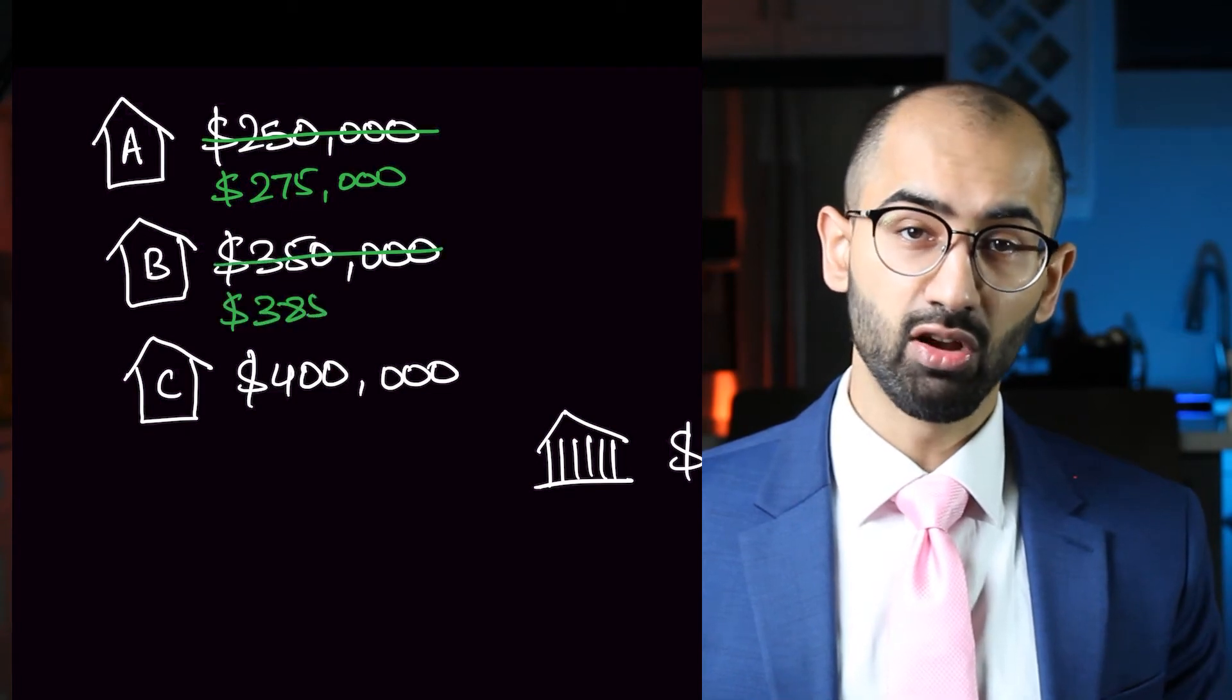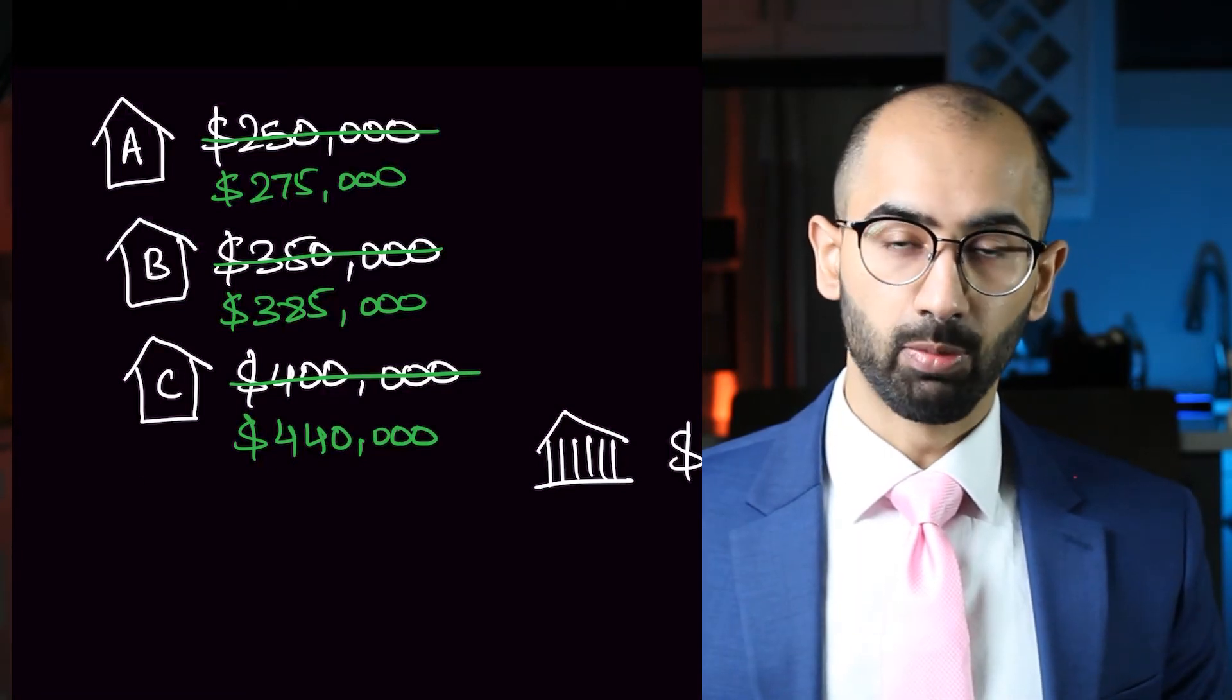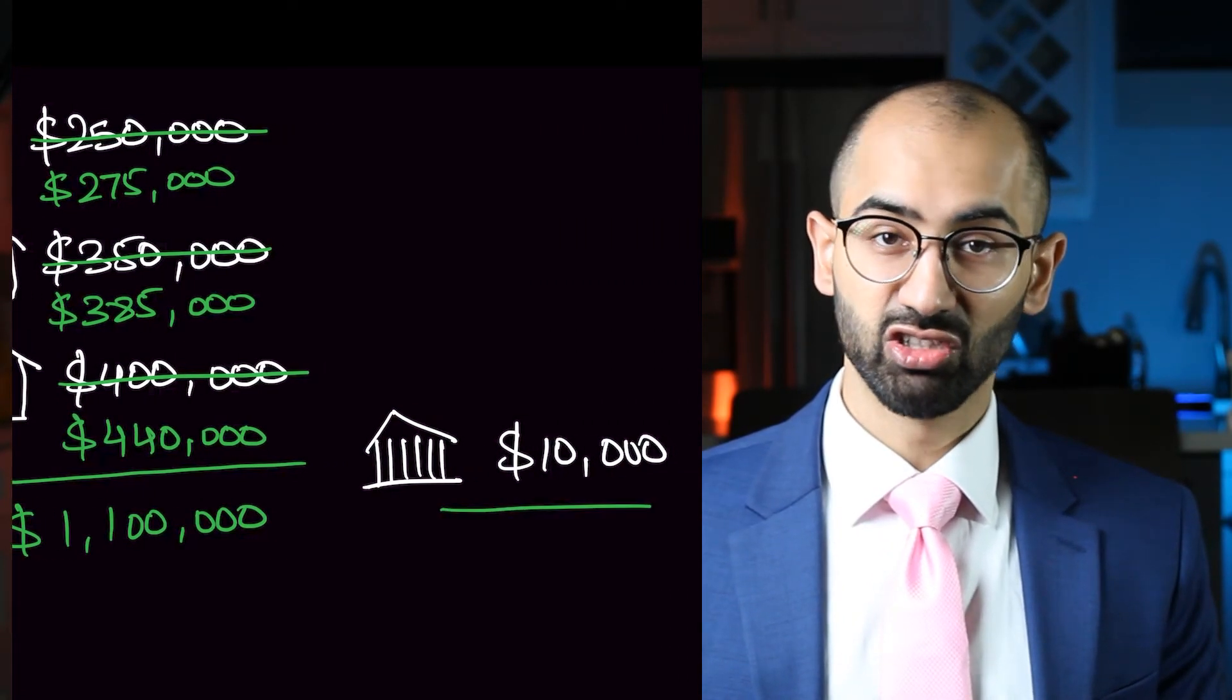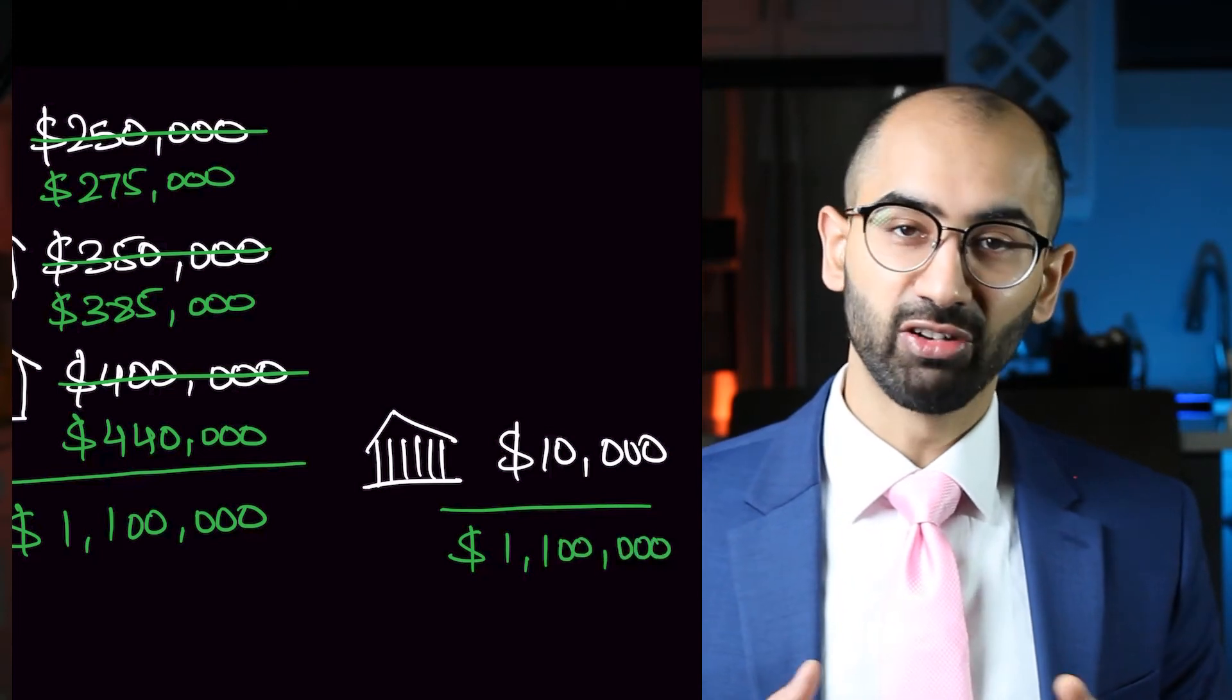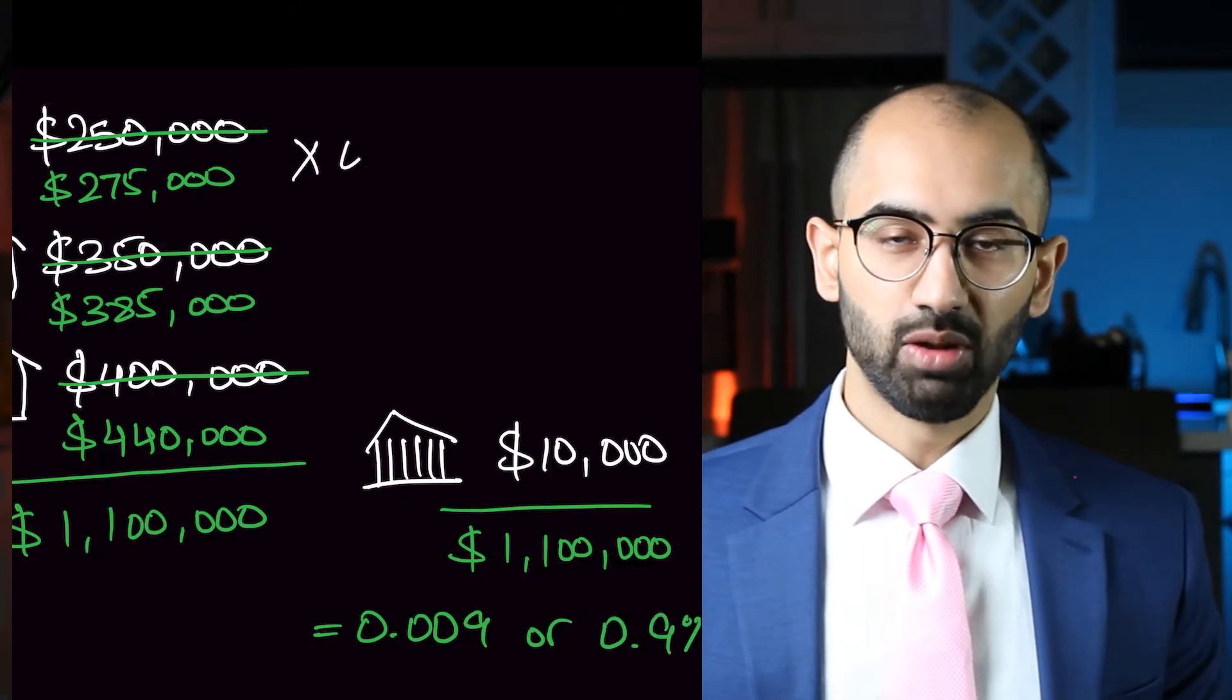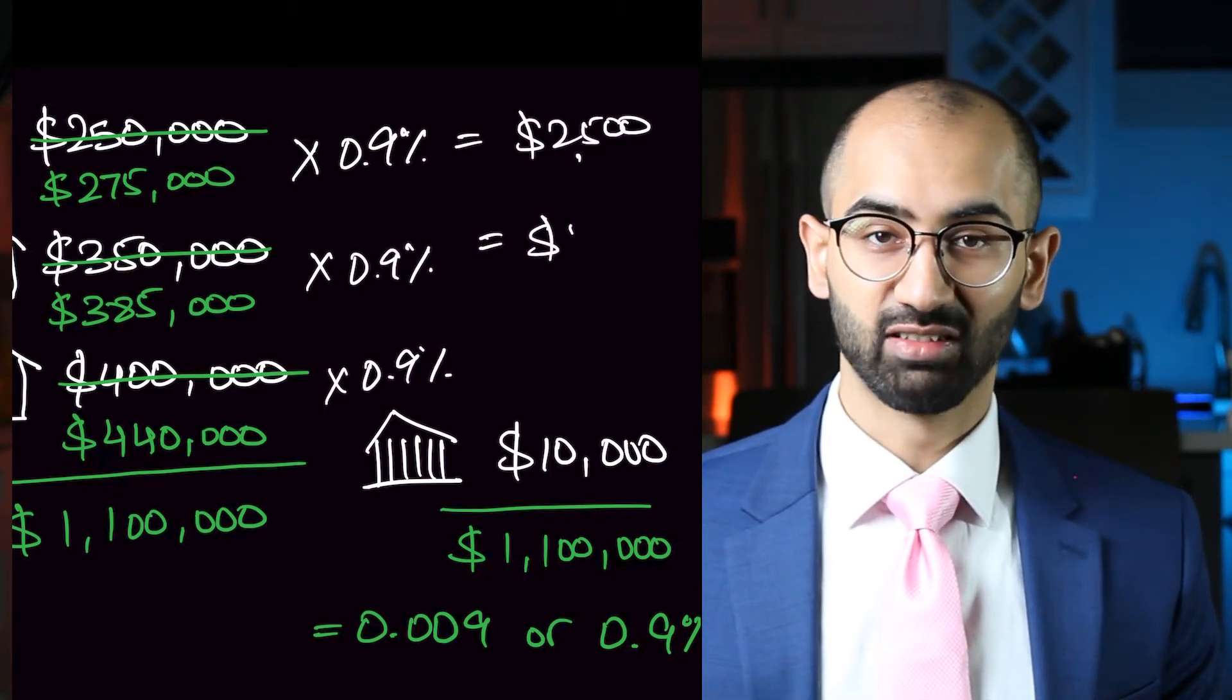$275,000, $385,000, and $440,000. In this case, the sum of all the property values in the neighborhood add up to $1.1 million. And if the city hasn't changed the amount of tax that they collect, which is $10,000, that brings their tax rate down to 0.009 or 0.9%. So if we multiply this new tax rate with the increased property values, we're going to get the exact same amount of property tax as before.